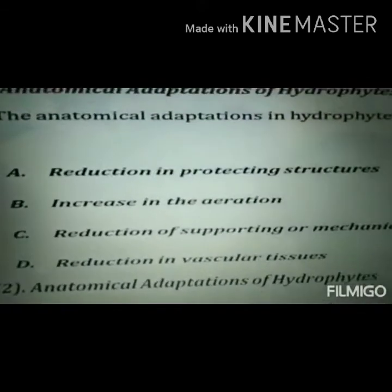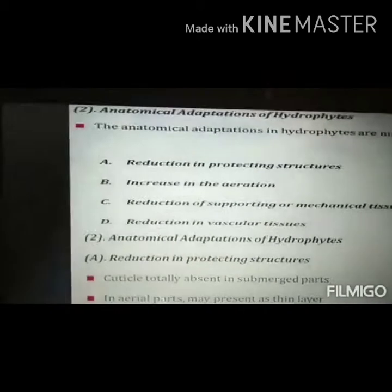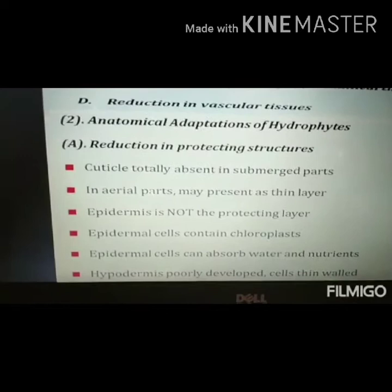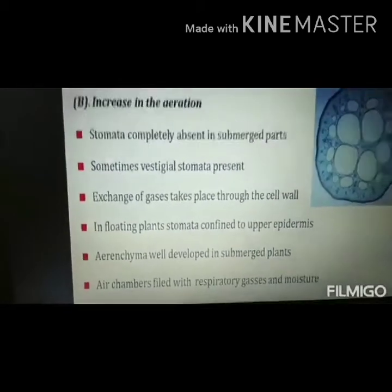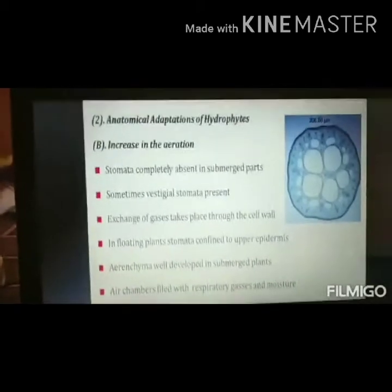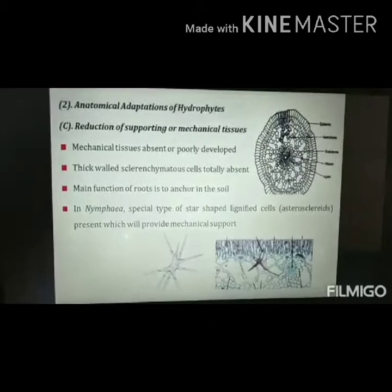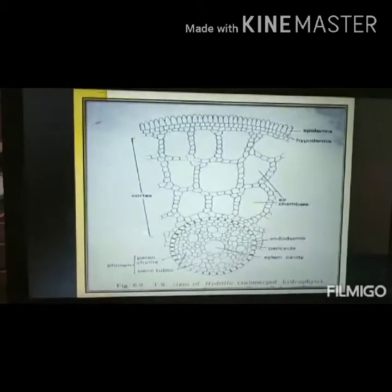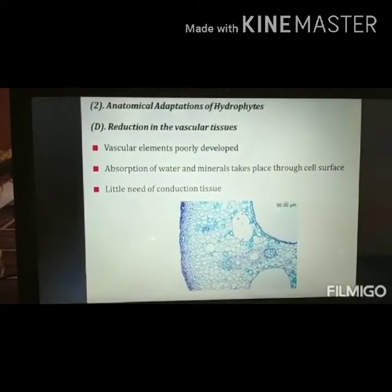Anatomical adaptations of hydrophytes include reduction in protective structures and the presence of aerenchyma cells, which increase aeration. The cuticle is usually totally absent on submerged parts, and the epidermis does not serve as a protective layer. Mechanical tissues are absent, and thick-walled sclerenchyma cells are totally absent in hydrophytes.